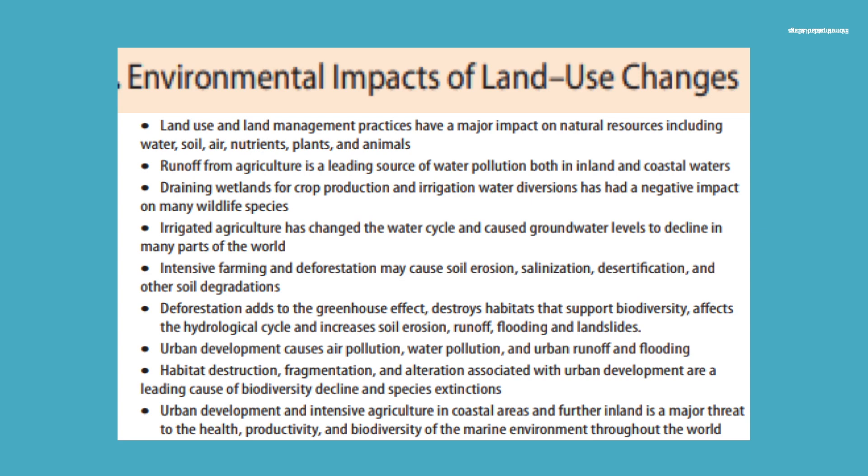Land use and land management practices have a major impact on natural resources, including water, soil, air, nutrients, plants, and animals. Runoff from agriculture is a leading source of water pollution both in inland and coastal waters. Draining wetlands for crop production and irrigation and water diversion has had a negative impact on many wildlife species.